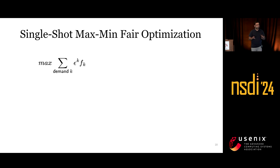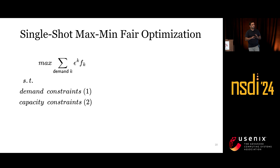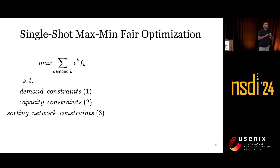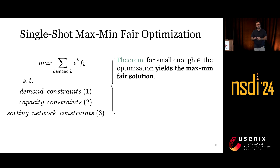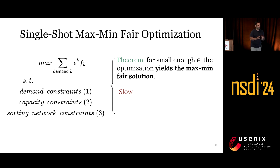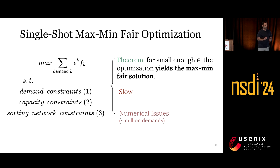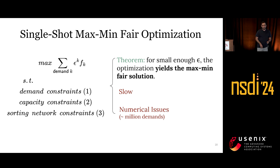In the end, the single optimization has epsilon weighting in the objective, common demand and capacity constraints, and sorting network constraints to sort demands by allocation. We proved this single-shot optimization gives the optimal max-min solution for a small enough epsilon. However, it has practical limitations: it's slow because the sorting network adds too many constraints, and it may run into numerical issues due to epsilon weighting — with millions of demands, epsilon to the power of k can be extremely small.